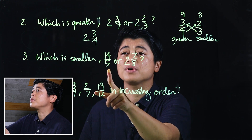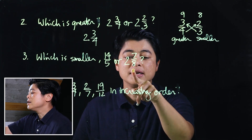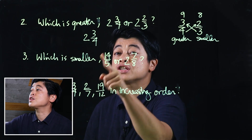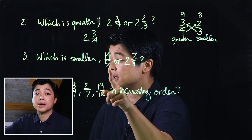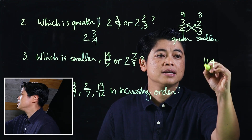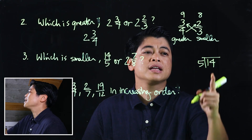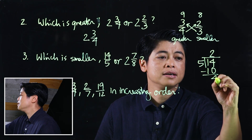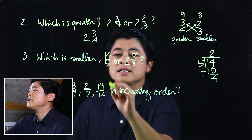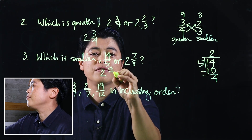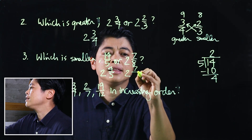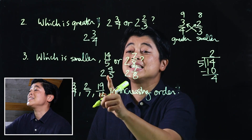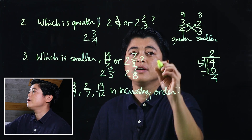The next question asks which is smaller. We have an improper fraction and a mixed number, so it's easier to change the improper fraction to a mixed number. Putting 14 divided by 5 on the side: that's two with remainder four, giving us two and four-fifths, compared with two and seven-eighths. Since the whole numbers are the same, we compare four-fifths and seven-eighths.